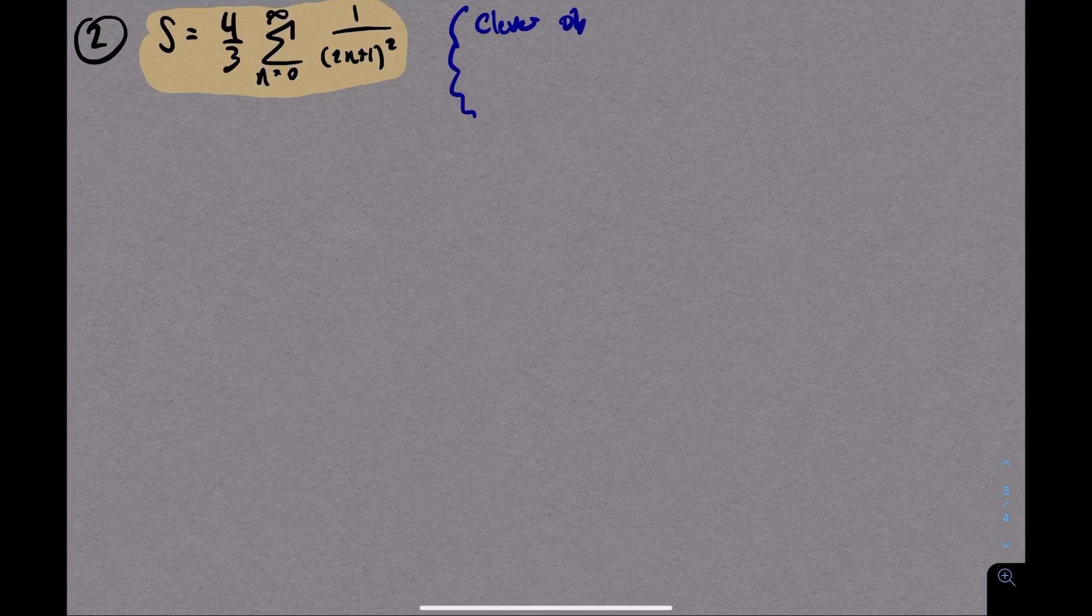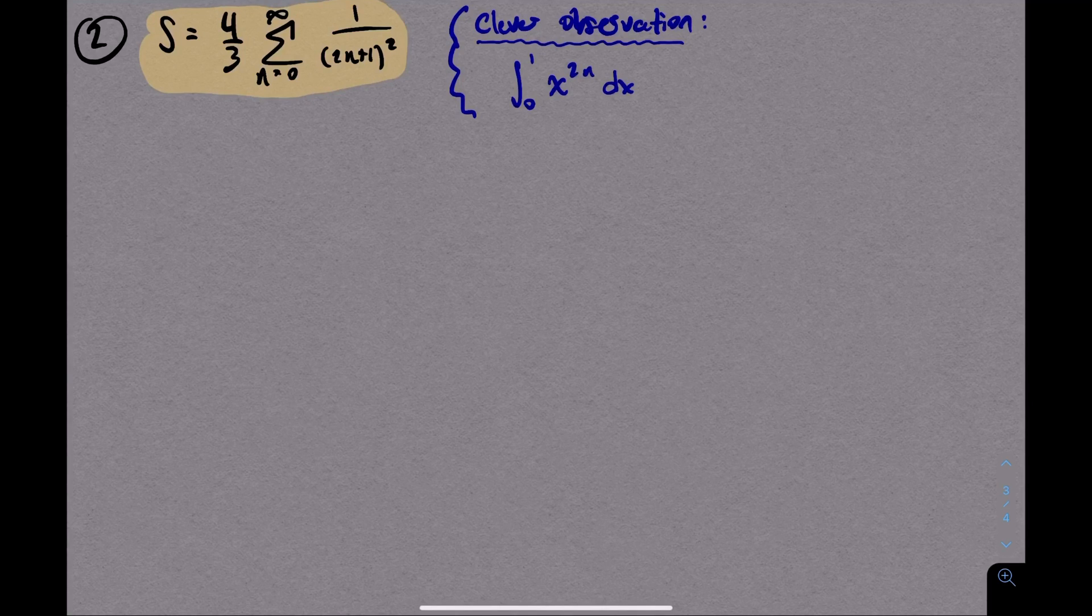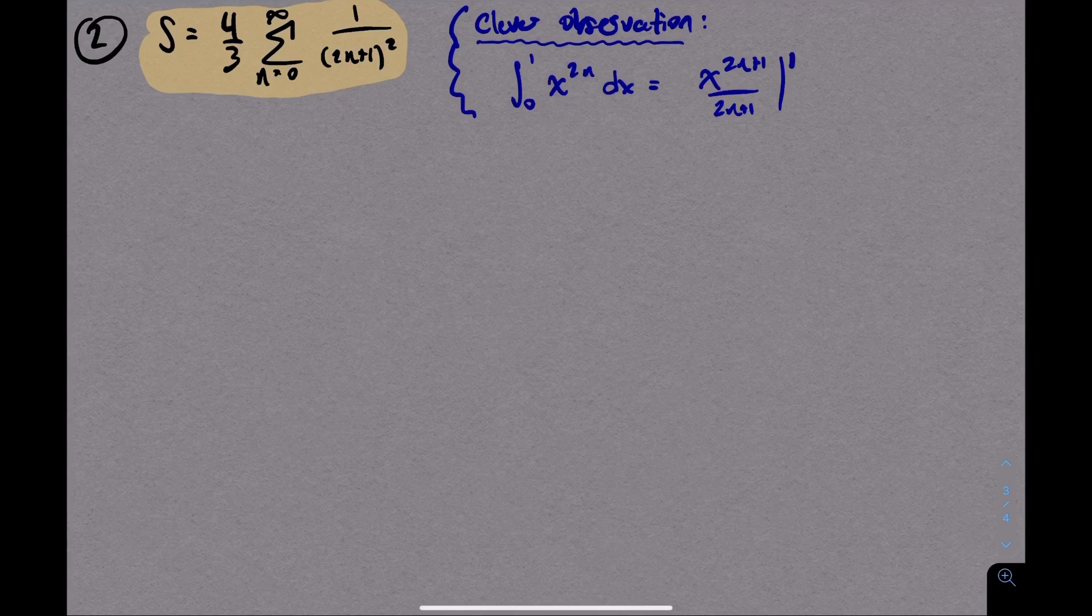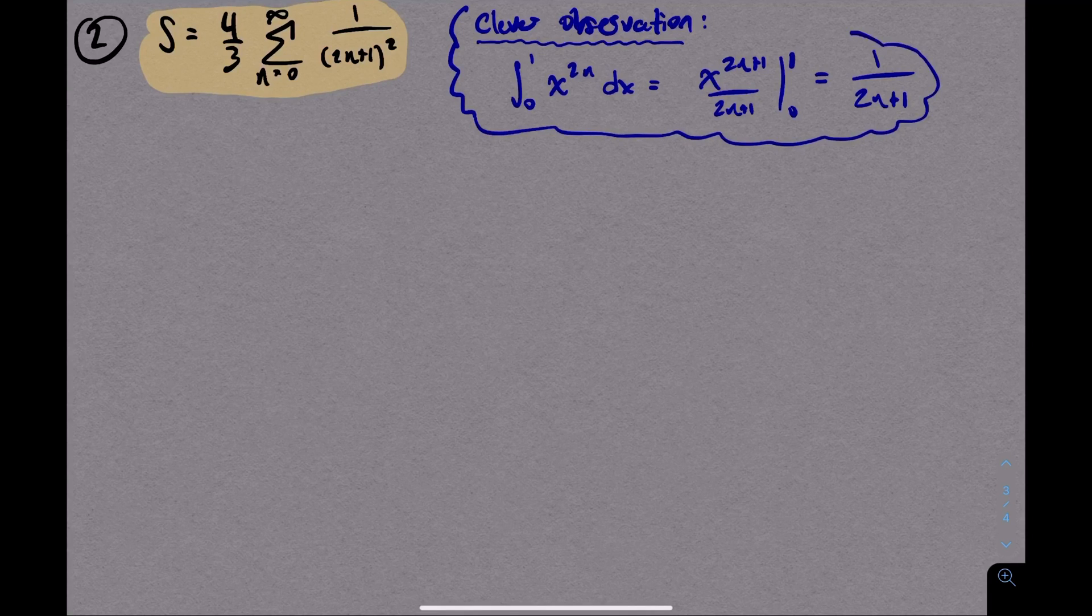The next step relies on the following very clever observation. Consider the integral from 0 to 1 of x to the 2n. This is a power rule problem. So to get the antiderivative, increase the power by 1 and divide by the new denominator. And then when we evaluate at x equals 1 and x equals 0, well, the 0 term goes away and I'm left with 1 to the 2n plus 1, which is 1 divided by 2n plus 1.